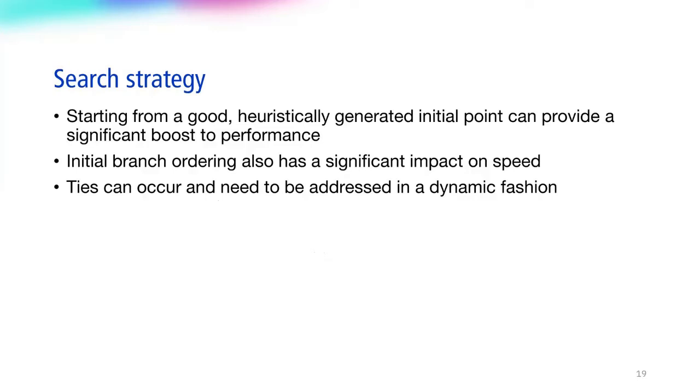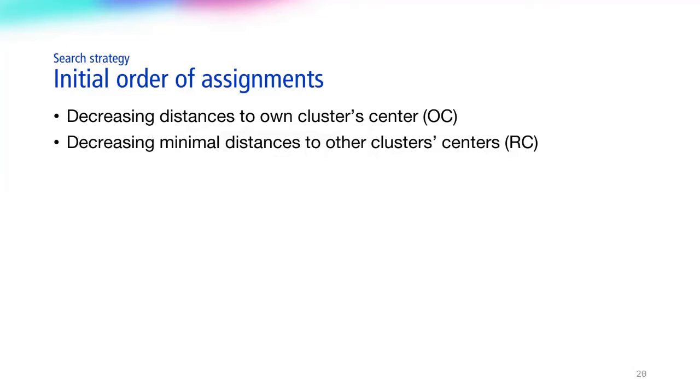We notice that the starting point of the search plays a crucial role in performance. In particular, starting off from a good, heuristically generated initial point can provide a significant boost to performance. Not only that, but the order of the initial decisions made in the leftmost branch impact the search as a whole. Moreover, ties can occur during the search process and these need to be addressed adequately. First, we propose two orders for the initial branching. Starting off from a heuristic solution, we introduce the decisions relative to it, either by decreasing distances to own cluster's center, or by decreasing minimal distances to other cluster's centers. These orderings are chosen because they place potentially disruptive, hard-to-assign observations near the root of the search tree, where we have a greater flexibility to recover from a bad choice.